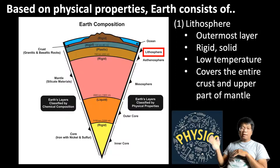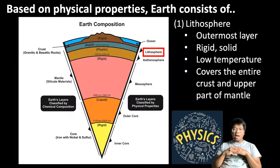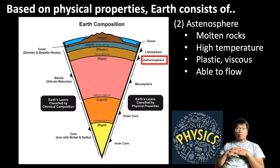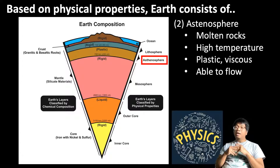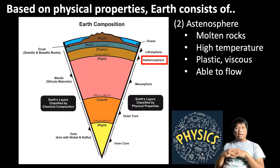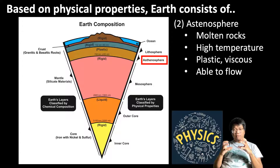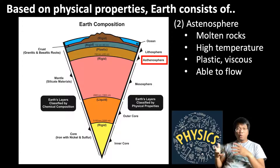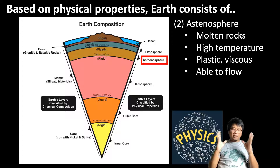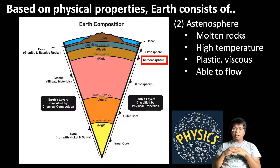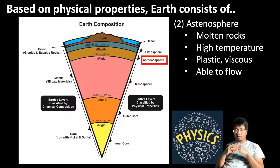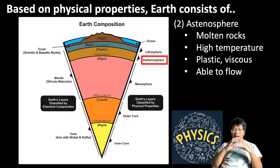Right underneath the solid lithosphere, we have the second layer called the asthenosphere, which consists of mostly molten rocks. It is hot down there and it is plastic and viscous. These physical properties allow the materials within the asthenosphere to flow. Remember this concept because we will talk about it again when we discuss plate tectonics. Just imagine a gooey part of the Earth that is able to flow, underlying the solid lithosphere.